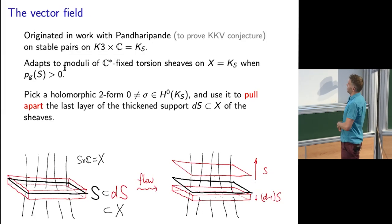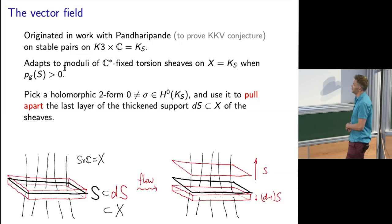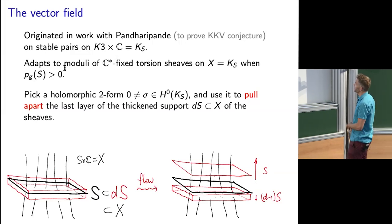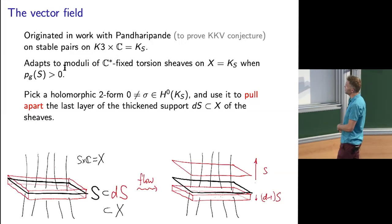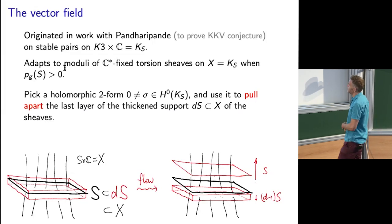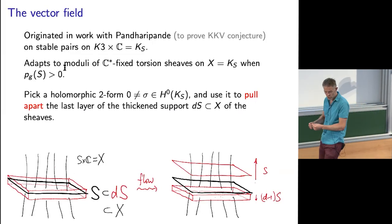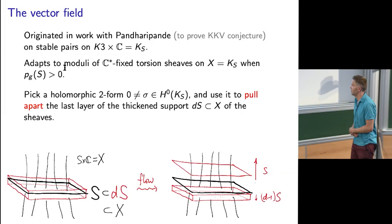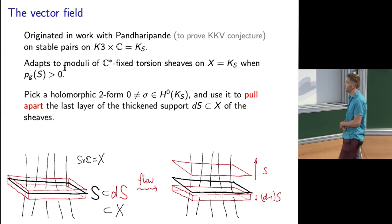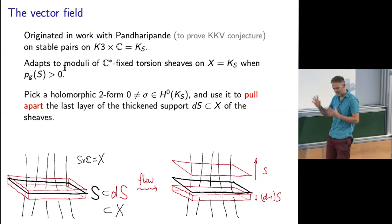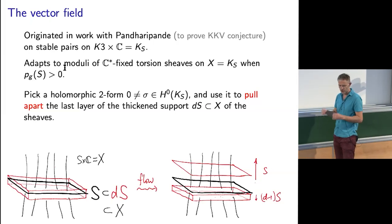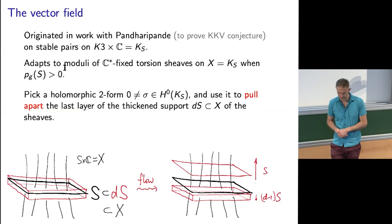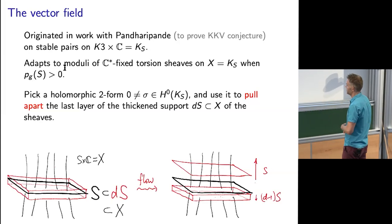It all depends on the surface having holomorphic two-forms, so it only works on general type surfaces. What we do is we pick a holomorphic two-form and use it to start moving our torsion sheaf on the threefold. More generally in the semi-stable case, you can also do that with Joy-Sung pairs or Mochizuki pairs, but I'll concentrate on sheaves.